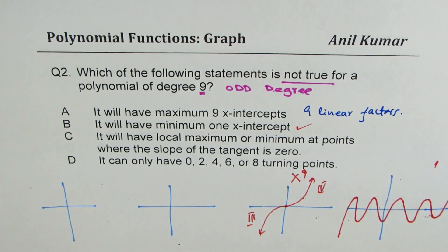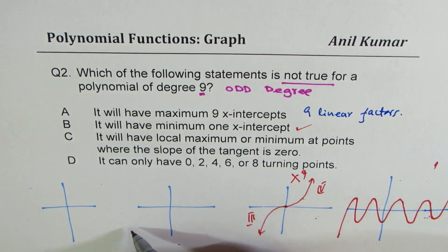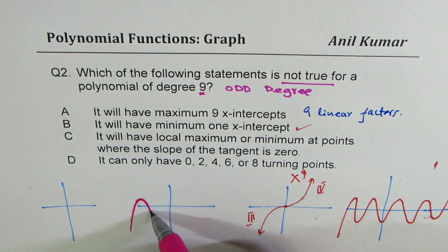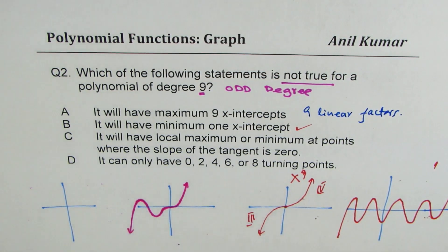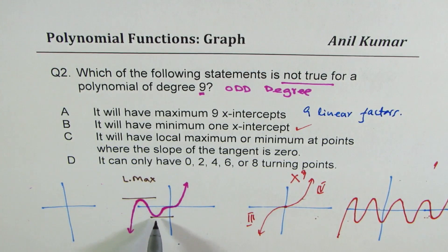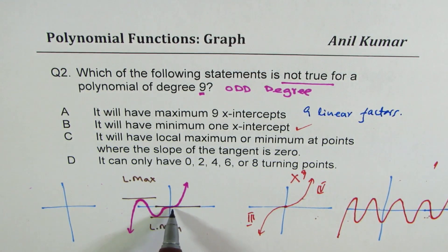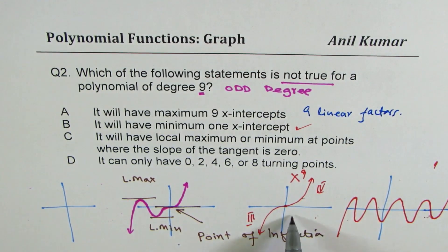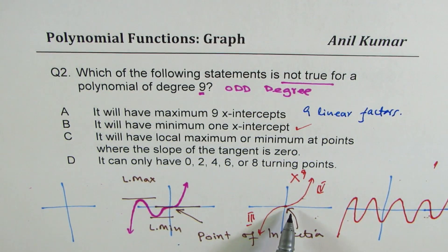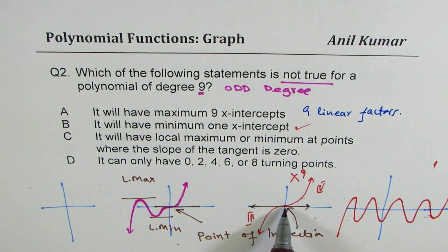C: It will have a local maximum or minimum at a point where the slope of the tangent is 0. Looking at a graph, the slope of the tangent is 0 at a local maximum and at a local minimum. But at the origin for x to the power of 9, the slope is also 0 yet it is neither — it's a point of inflection. So C is incorrect.